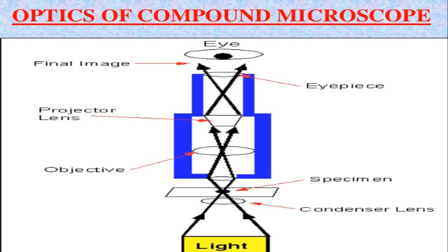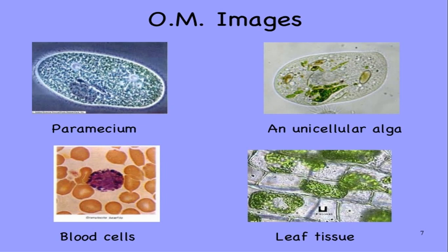So these three types, the image which is small, that we can see in a bigger level with the help of this optical microscope. Now what are the application of this optical microscope? We can see paramecium, unicellular algae, blood cells, we can see leaf tissues that we can be able to view with the help of optical microscope.